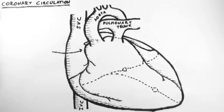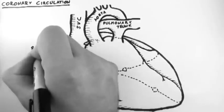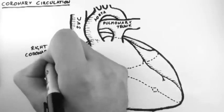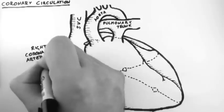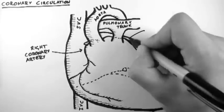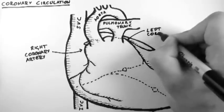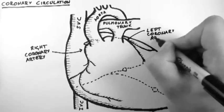Now this vessel here is the right coronary artery, and this one over here is the left coronary artery, and they arise from the aorta just after the aortic valve.